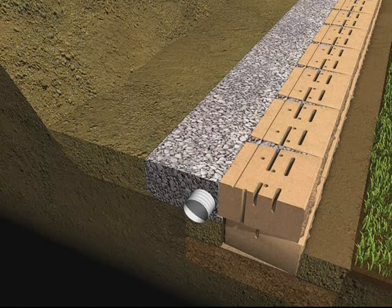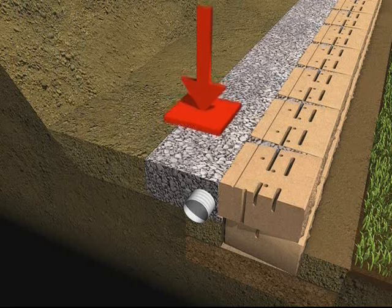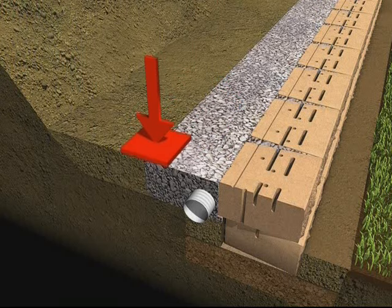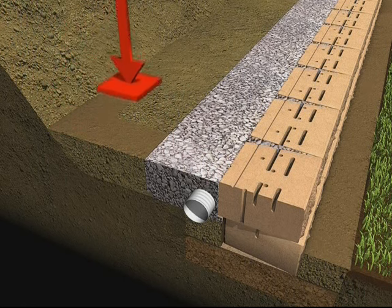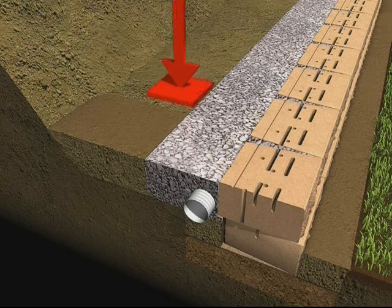Place soil backfill directly behind the drainage aggregate and then compact both. Proper placement and compaction of backfill is critical to the stability of a segmental retaining wall.